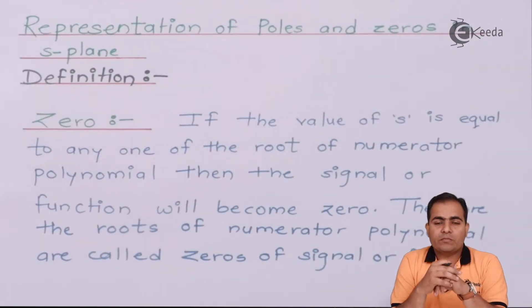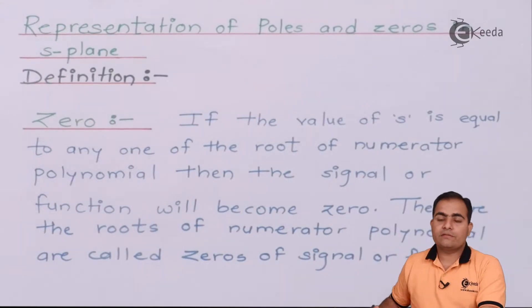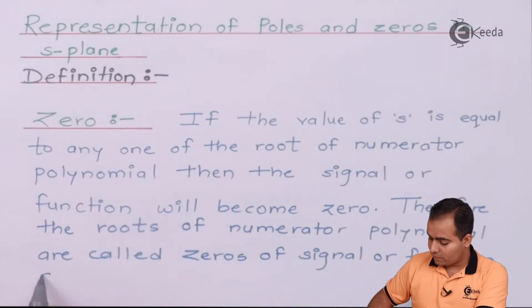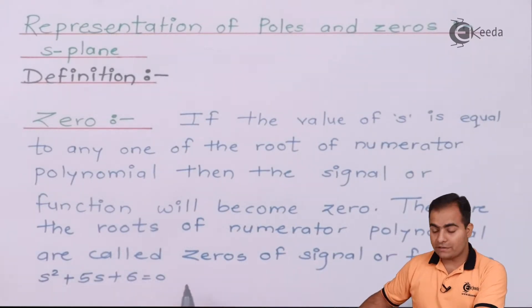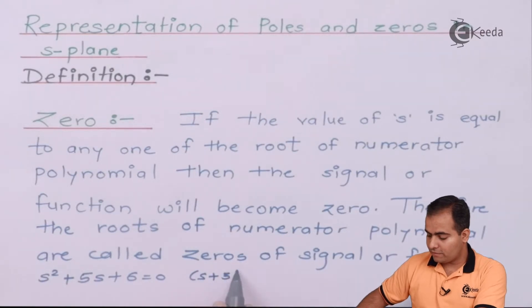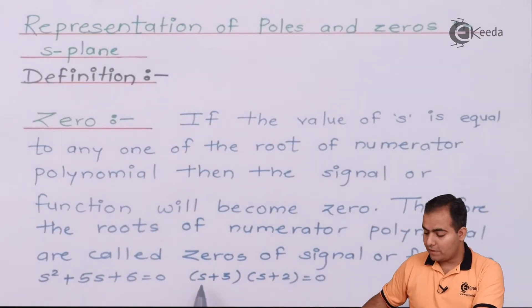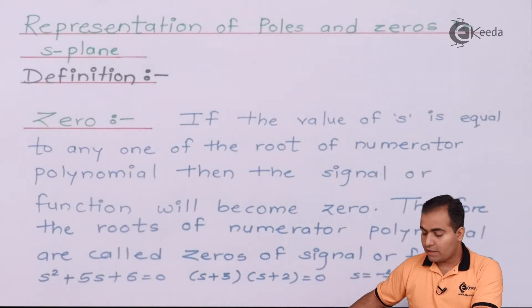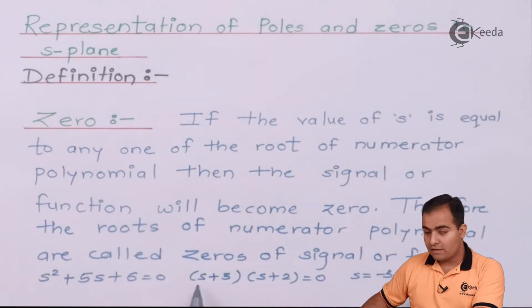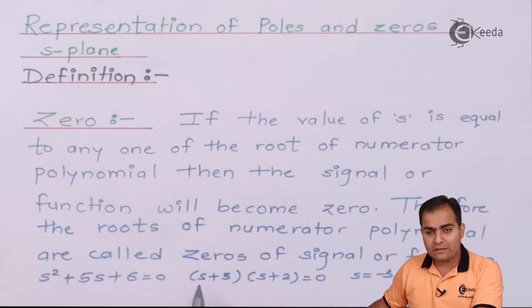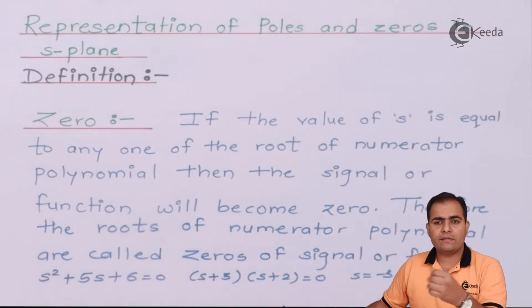Whenever we write the equation, the roots are always present in product form. Suppose the function has roots (s + 3)(s + 2). Equate s + 3 = 0, giving s = −3. If we replace s by −3, the whole bracket becomes 0, and multiplying that 0 with the other part makes the whole function value equal to 0.